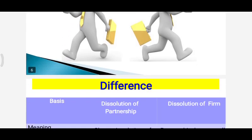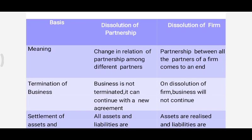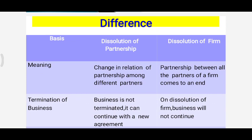Now let's see the difference between dissolution of partnership and dissolution of firm. The first point of difference is meaning. Dissolution of partnership means a change in the relationship among different partners. But in dissolution of firm, the partnership between all the partners finally comes to an end.